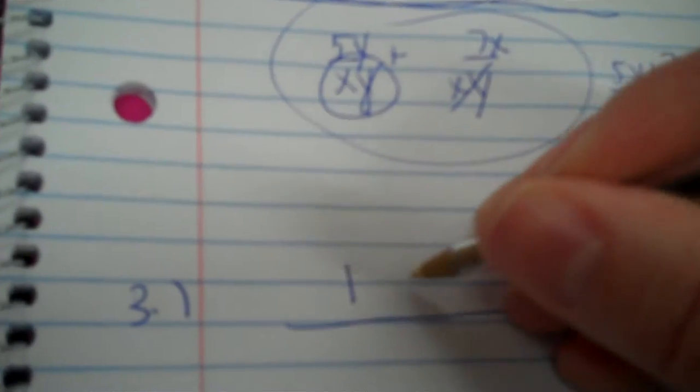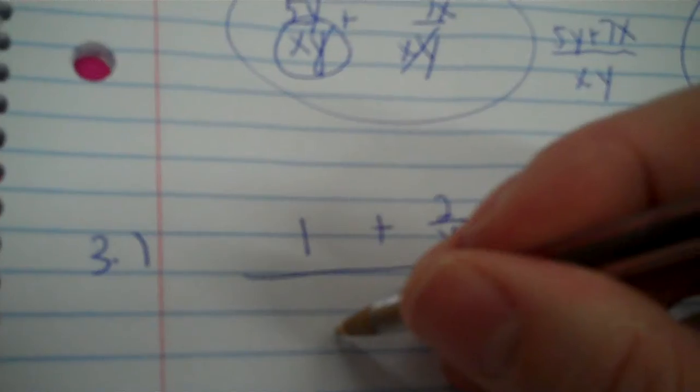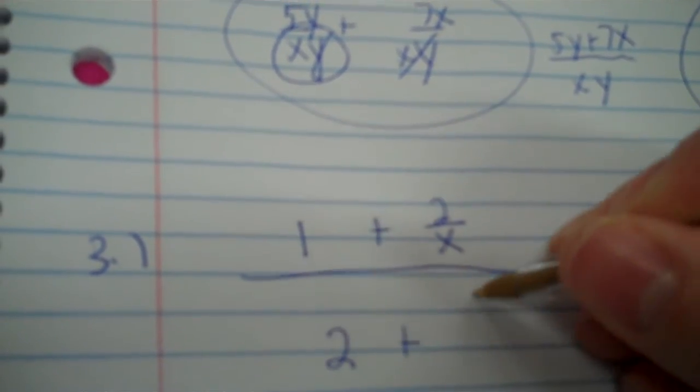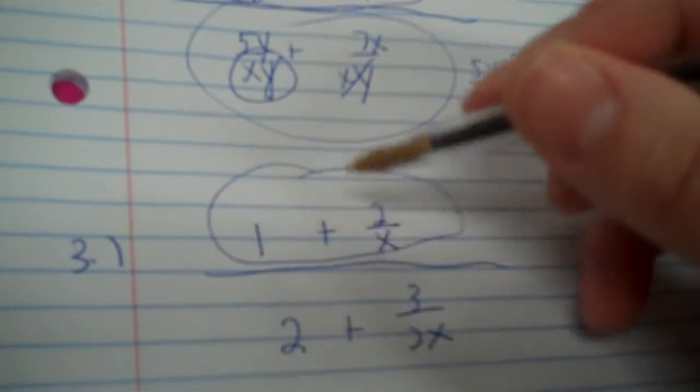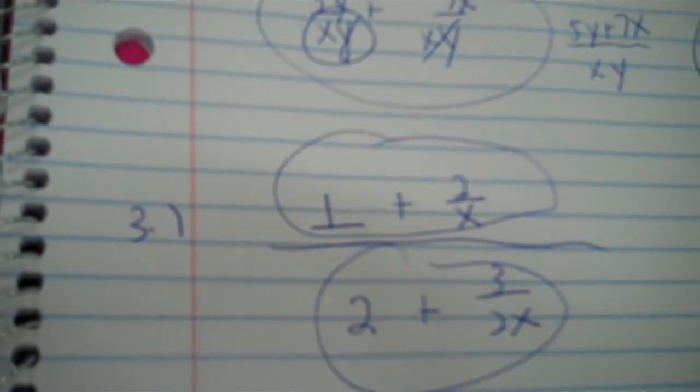Okay, number three. One plus two over x. And then two plus three over two x. Okay, so simplify your top. Well, we underline the one.